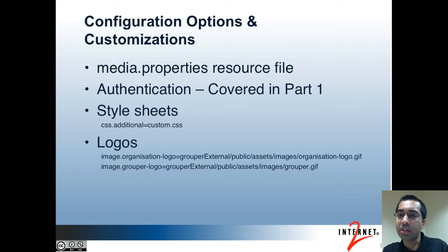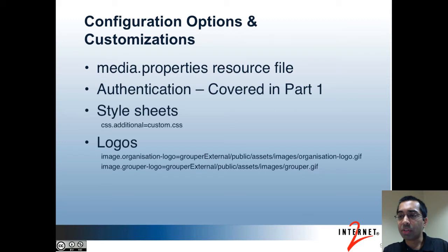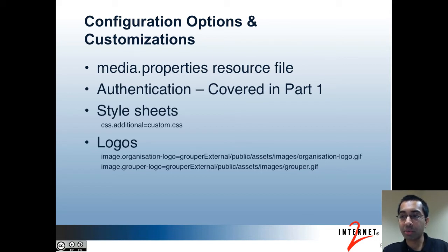Now I'll talk about other various configuration and customization options. This only covers a small number of what you might want to customize; for more information you should look at the Grouper wiki. Configuration options are largely in the media.properties file. If you're looking to customize authentication — for instance using Shibboleth, Kerberos, or LDAP — take a look at the first part of this tutorial. Using media.properties, you can easily add your own custom stylesheets by setting a value for the css.additional property. Your CSS will add and override the CSS delivered by Grouper. You can also disable Grouper's default stylesheet, and the UI properties allow you to update a couple of logos as well.